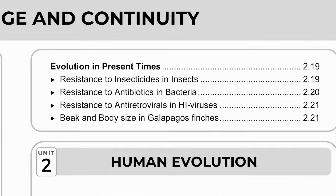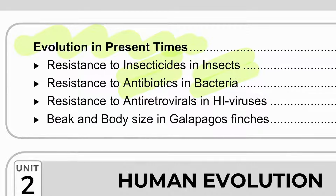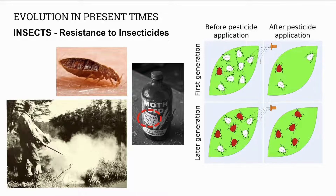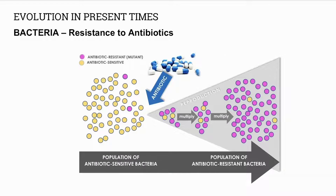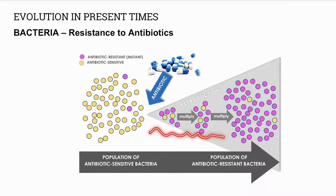Then we'll have a look at evolution in present times. We can see insects developing resistance to insecticides, bacteria developing resistance to antibiotics, and HIV viruses developing resistance to antiretrovirals. For example, some insects may have a random mutation that makes them resistant to a particular insecticide like DDT. These mutated forms survive, they multiply, they pass on the gene, and eventually we get a population resistant to the insecticide. Similarly, bacteria can develop a mutation that makes it resistant to a particular antibiotic — they survive, multiply, and eventually an entire population can be resistant.